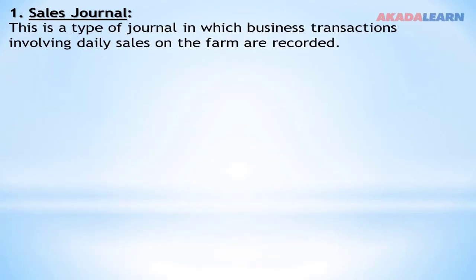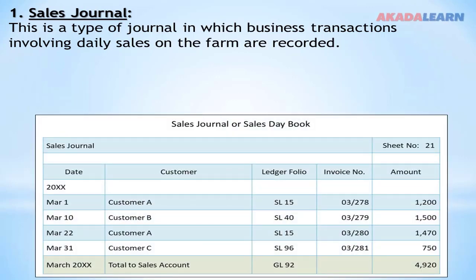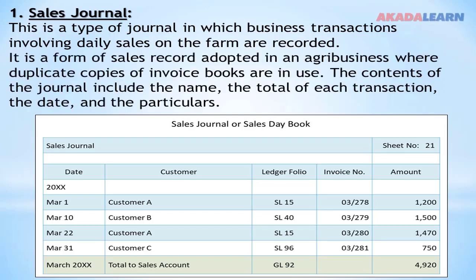Now let's look at sales journals. Sales journals are the type of journal in which business transactions involving daily sales on the farm are recorded. Here is an example of a sales journal — the dates are there, for example March 1st, Customer A, invoice number, and the amount. At the end of the day everything is totaled together. There is a daily record but it can be totaled month by month or by quarter.